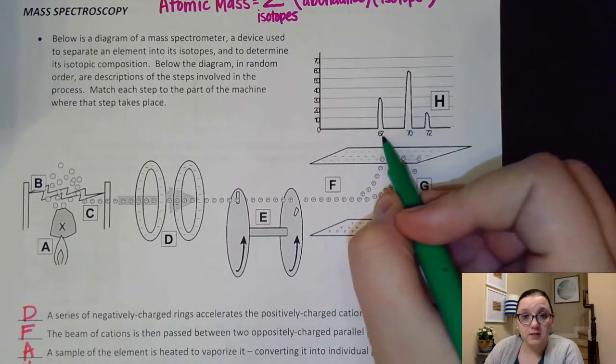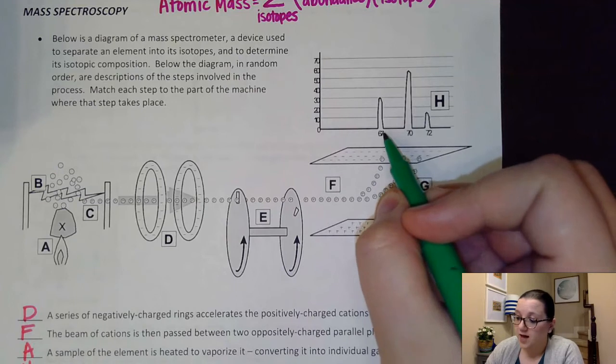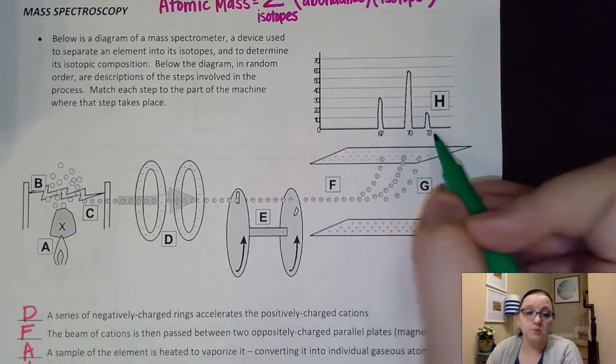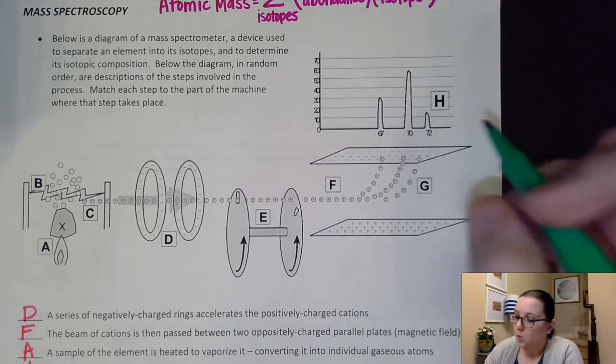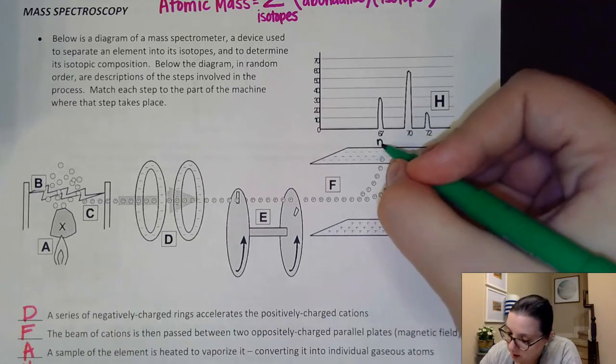We notice for this particular sample that they ran through, we have one, two, three isotopes due to the three different peaks. One has a, and by the way, these are our mass numbers.